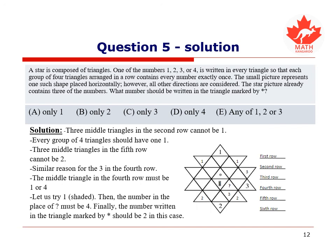Now, let us try 1, then the shaded number. Then the number in the place of the question mark must be 4. Finally, it is clear that the number written in the triangle marked by the asterisk should be 2 in this case.